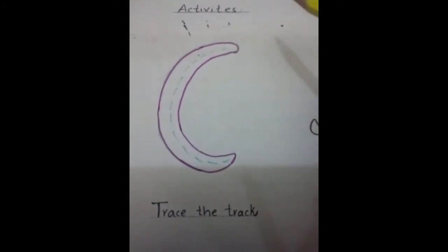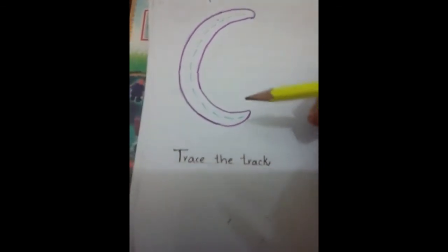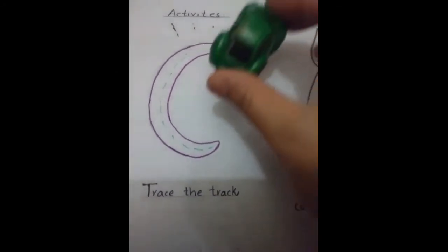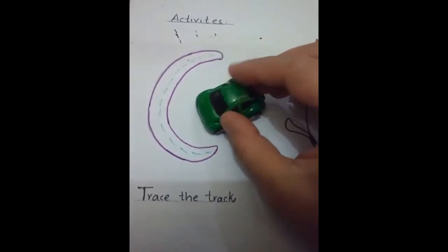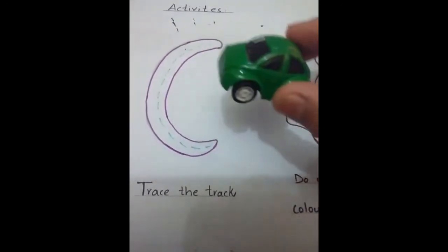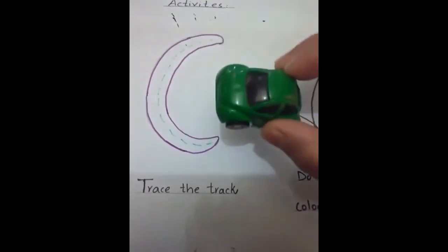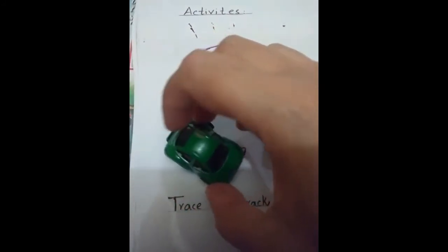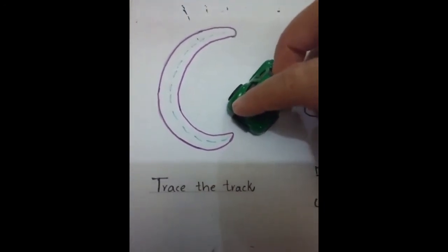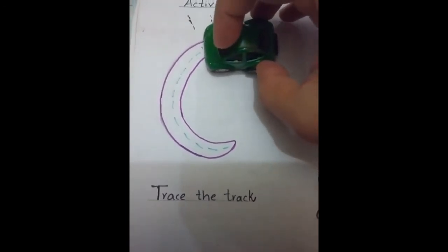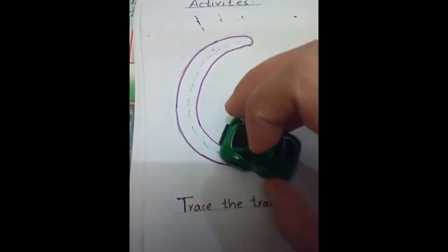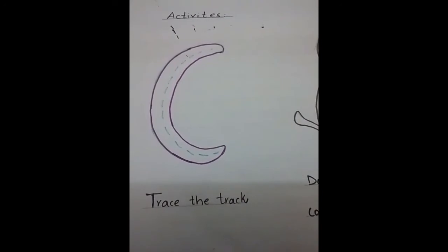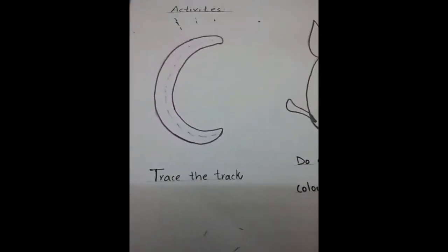Now I will tell you about the first activity — trace the track. We will trace the track with the help of — what is this? This is a car. First I will trace this track with the help of this car. See — car! Peep peep! Wow, car. Again — see, car. Excellent.